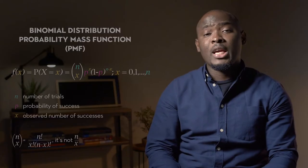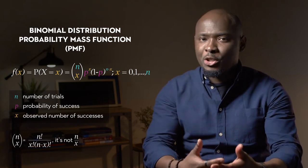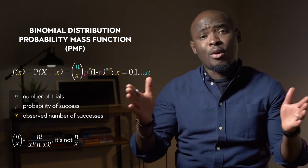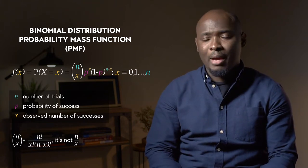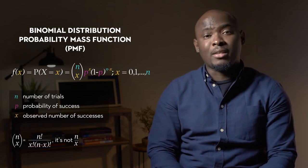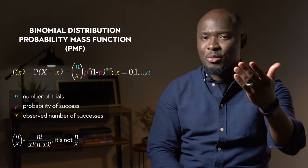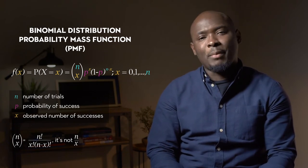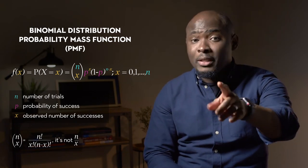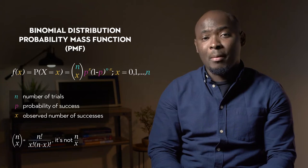That brings us to the probability mass function, or PMF, of the binomial distribution. All the examples we've talked about have the same form for the PMF of the random variable. We have that f of x is equal to n choose x, the probability of success p raised to the power of x, multiplied by one minus p — the probability of failure on any given trial — raised to the power of n minus x.